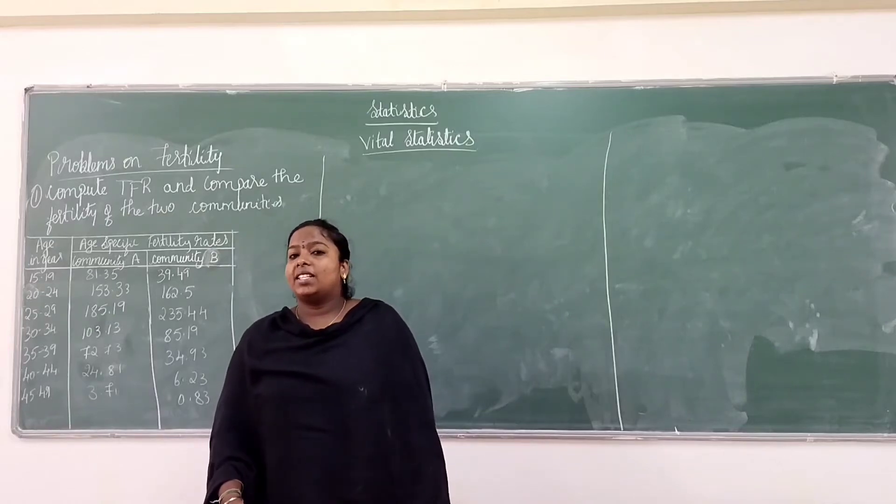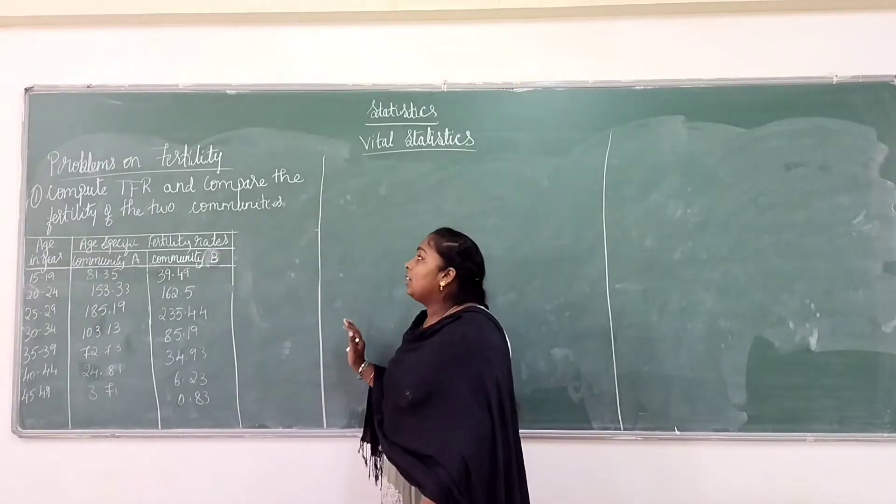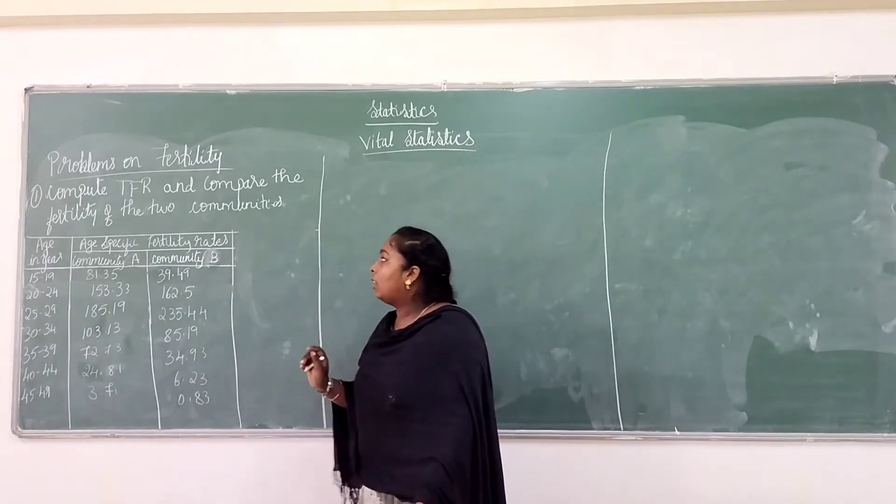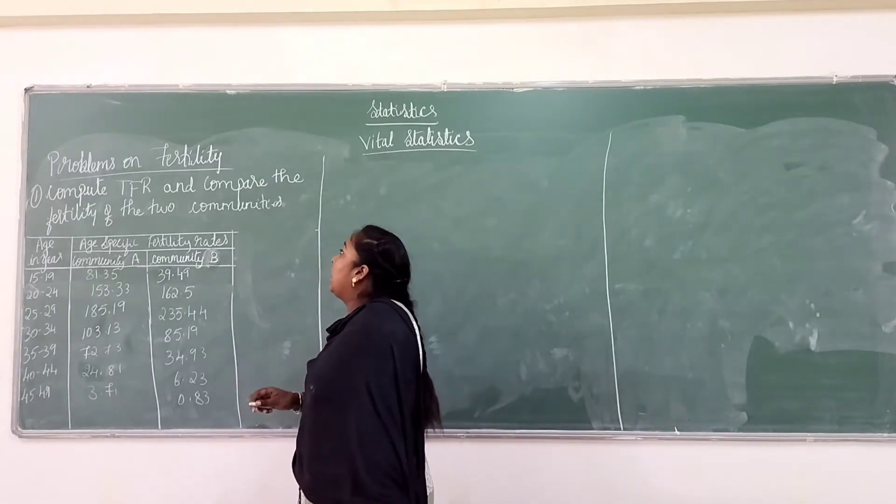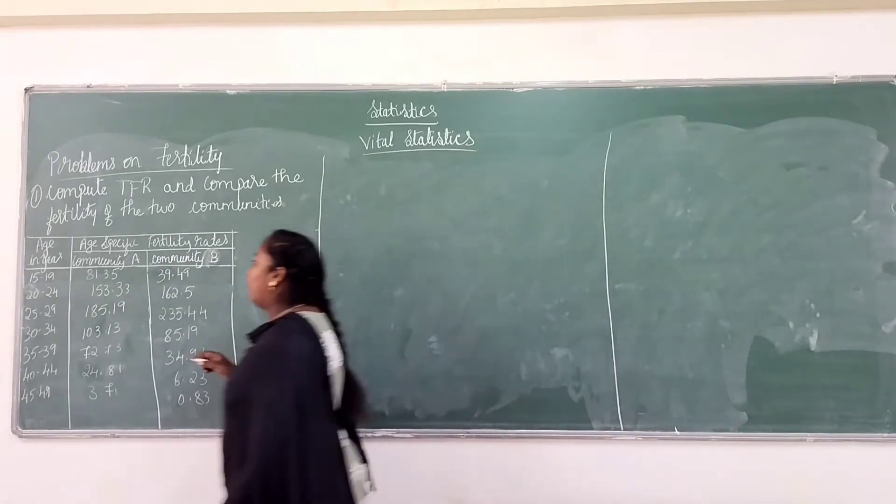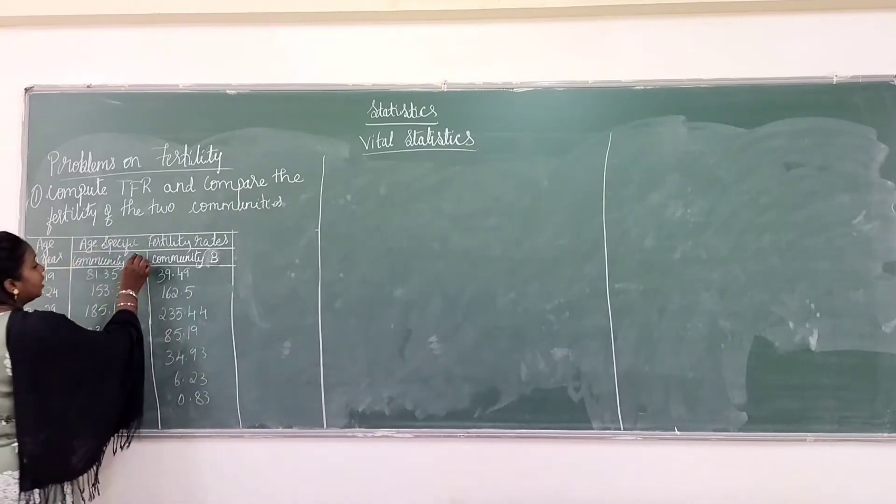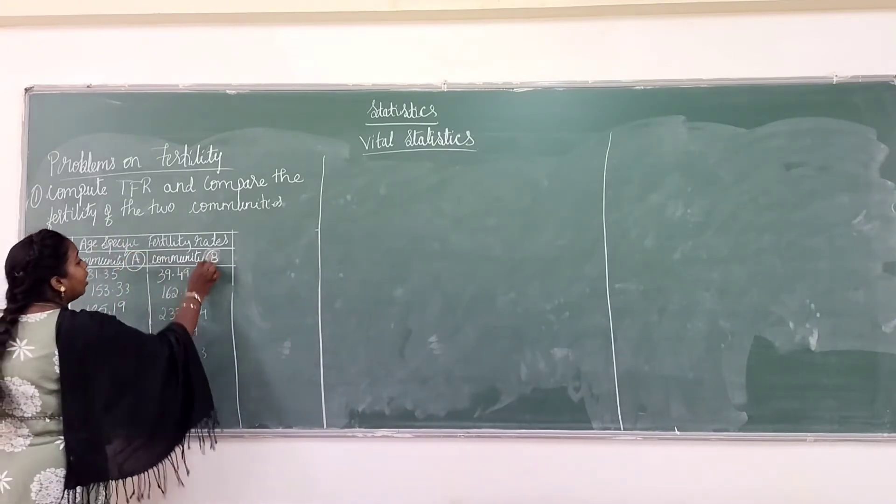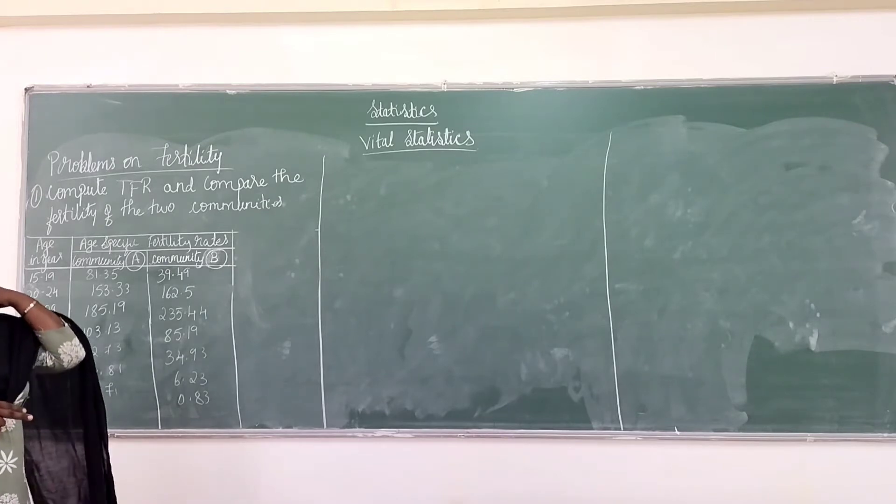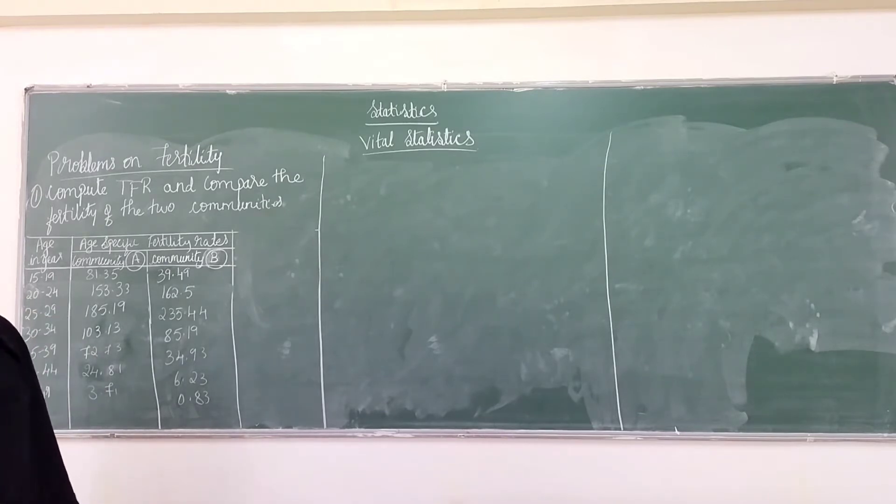Good morning students. Today we will be seeing problems on fertility. This will be your last topic on fertility. Here, complete total fertility and compare the fertility of two communities is given. Age-specific fertility rates for community A and community B are given, so we will find out total fertility rate and compare which has greater fertility.